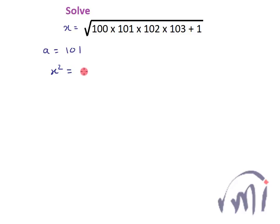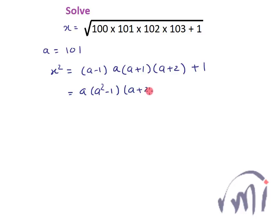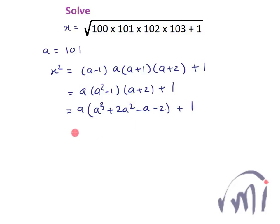So x squared can be written as (a−1)(a)(a+1)(a+2) + 1. Now (a−1)(a+1) is a²−1, so this becomes a(a²−1)(a+2) + 1. Expanding: a³ + 2a² − a − 2 + 1, and multiplying by a gives a⁴ + 2a³ − a² − 2a + 1.